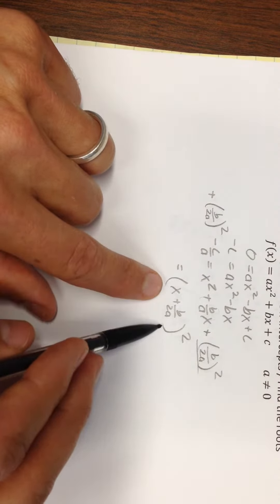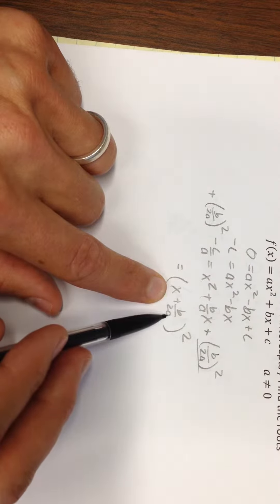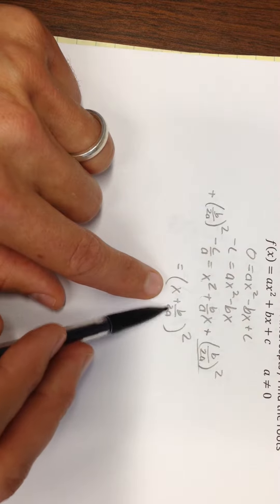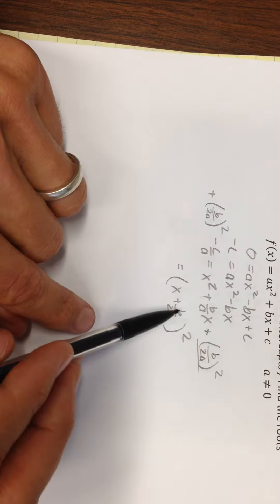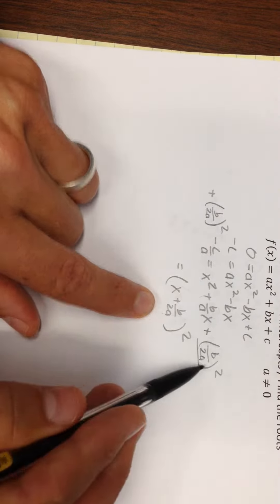If you think about multiplying this times itself, x times x gives me that. x times b/2a plus b/2a times x gets me 2b/2a, reduces to b/a x. And then of course this squared gives me that.